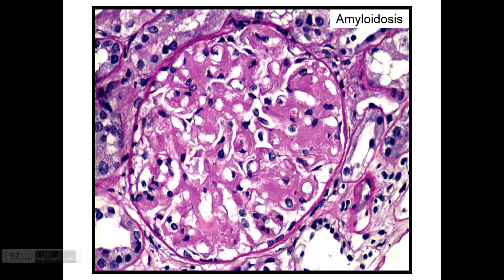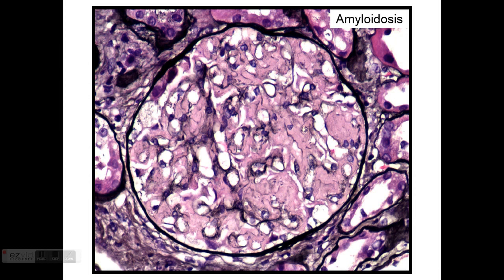In amyloid, you see deposition of this amorphous, acellular material that starts off usually in the mesangium and then goes down the capillary walls, destroying the entire structure — from mesangial expansion to obliteration of some capillary loops. It also creates deposits in the tubules or tubular basal membranes and interstitium, with significant vascular deposition as well. This material does not stain with silver, so silver stain is quite helpful — the basal membranes still stain, but the deposited material will not.